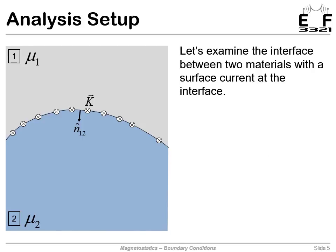Let's derive the boundary conditions for the tangential components. Here's our setup: we have the interface between two different materials. Material 1 is described with a permeability mu_1 and material 2 with a permeability mu_2. Along the interface we also have a surface current K. That means there is a current passing into the screen — it's parallel to that surface and traveling in the third dimension.